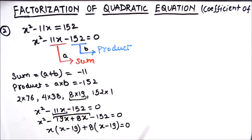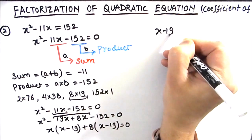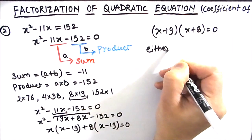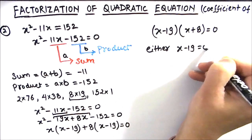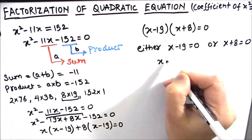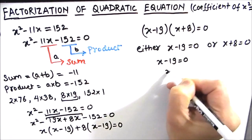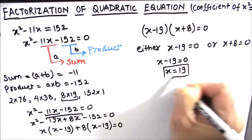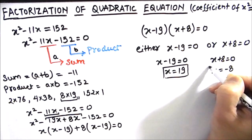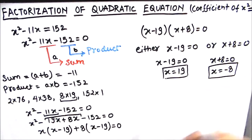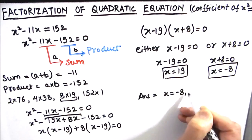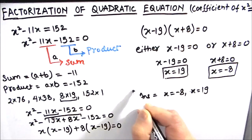Now we take x minus 19 as common from both terms, giving us x minus 19 times x plus 8 is equal to 0. So either x minus 19 equals 0, giving x equals 19, or x plus 8 equals 0, giving x equals negative 8. So the two roots of the equation are x equals 19 and x equals negative 8. This is our final answer.